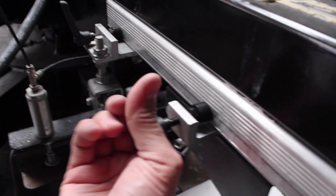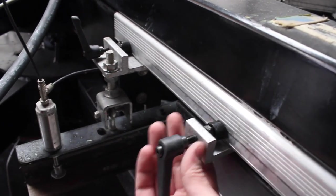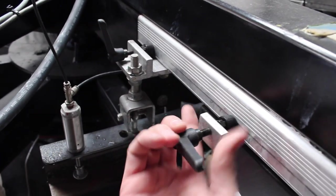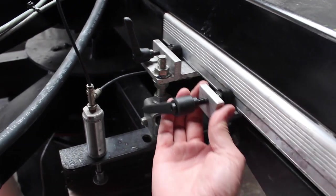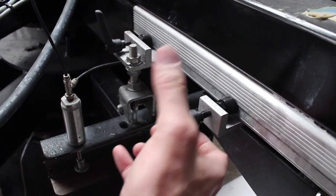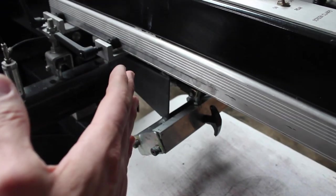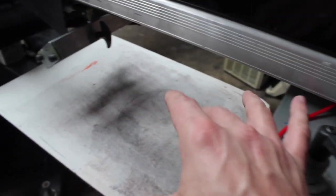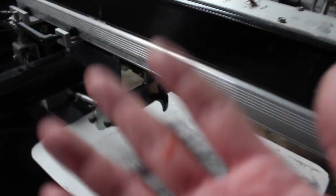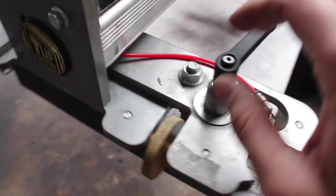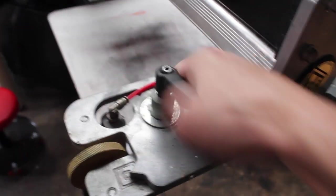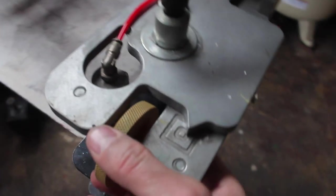Up next we have the stroke length adjustment knob here. You can loosen this knob and move it forward or backward in order to get the stroke length that you need. No sense in making it do a full stroke if you're only doing a small little left chest print or something along those lines.